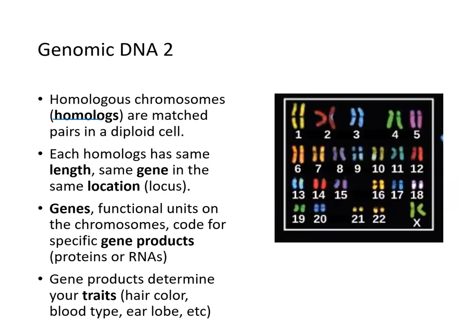Homologous chromosomes, or homologs, are matched in pairs in a karyotype. Each homolog has the same length and the same genes at the same location — we call that location a locus. This is remarkable because one chromosome came from the mother and the other from the father, yet they contain the same genes in the same locations. Genes are functional units on the chromosome that code for specific gene products, which can be proteins or functional RNAs like small interfering RNAs and ribosomal RNAs.